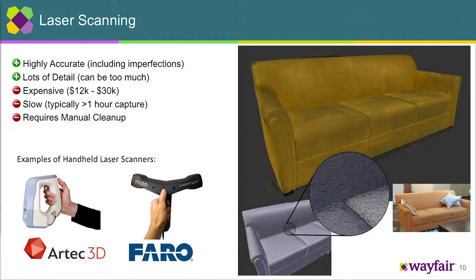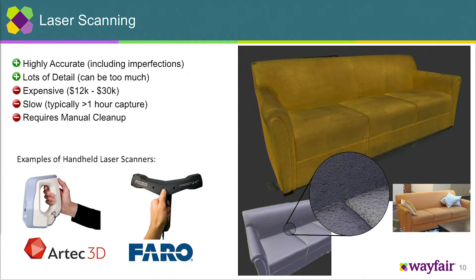An area of interest for us is scanning. Laser scanning is really cool technology but also a bit prohibitively expensive. It picks up all kinds of detail — both things you want and maybe things you don't want, like imperfections. A couch I scanned had a weird-looking texture because the lighting conditions from different angles fused together. But if you look closely at the surface detail, you pick up tiny little wrinkles and imperfections that really add to realism. We want to capture that data in a scalable way, but today the state of laser scanning is a little too expensive for mass-market applications like ours.